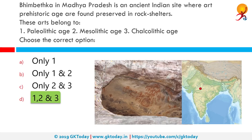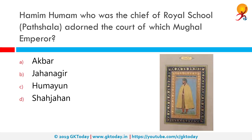So all three ages are represented, and the correct answer is one, two, and three. Hakim Humam, who was the chief of the royal school or Pat Shala, adorned the court of which Mughal Emperor? The correct answer is Akbar. Hakim Humam was one of the Navratnas of Akbar.